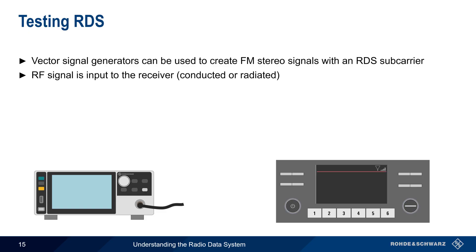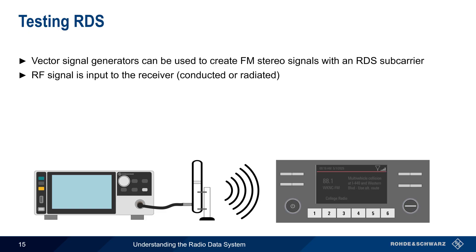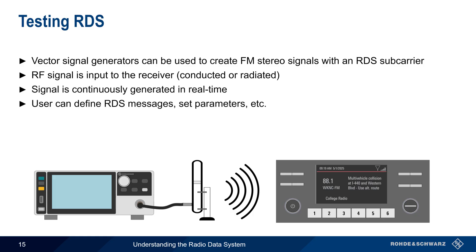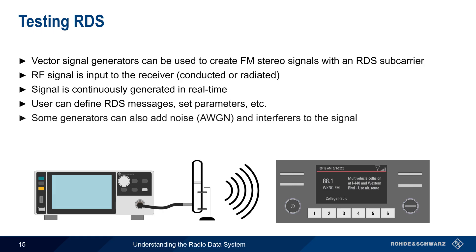The signal is transmitted continuously in real time, and the user can define which RDS messages are sent, as well as the contents or parameters within those messages. In addition, some generators can add noise or interferers to the signal to test the receiver under more realistic or more challenging conditions.